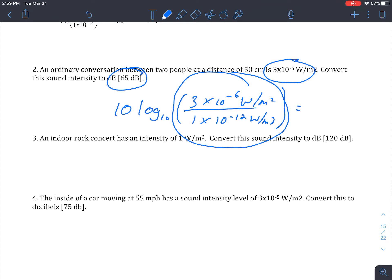So in number 3, we have an indoor rock concert. It has an intensity of 1 watt per meter squared. So that's a lot, because anything that's not going to have that smaller number, that scientific notation with a negative exponent, it's going to be a clue that it's a pretty loud sound. So we're going to convert this to decibels. So we're going to have our 10 log base 10.